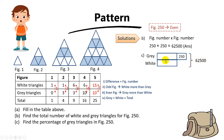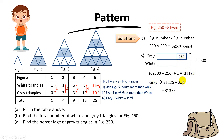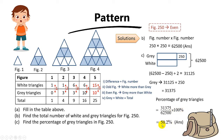Now with this model — grey is more than white by 250, total is 62,500 — we can find both values. To find the white triangles: take the total minus 250, then divide by 2, giving 31,125. The grey triangles are 31,125 plus 250, giving 31,375. To find the percentage of grey triangles, take 31,375 divided by 62,500, times 100%, giving 50.2%. That's your final answer.